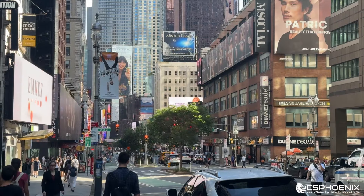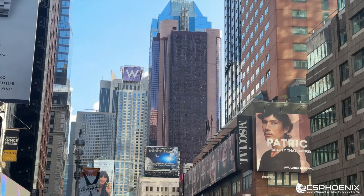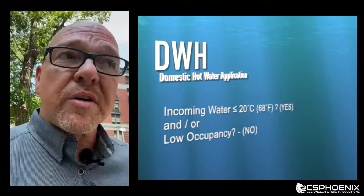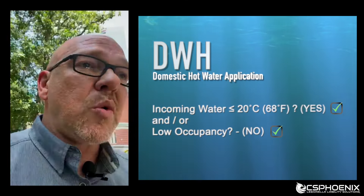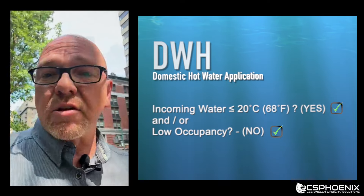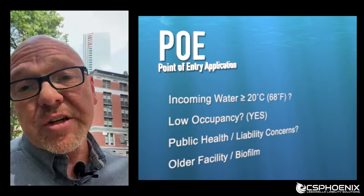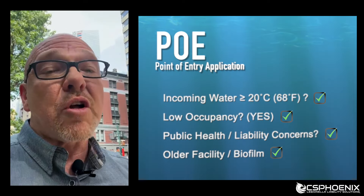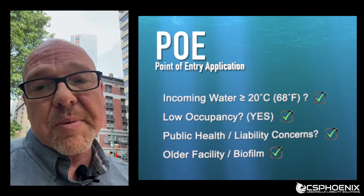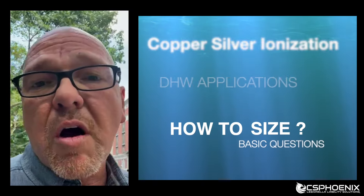This can be determined by the type of building. If it's fully occupied, you might just want to focus on the hot water side. If you are a facility with a low occupancy rate and there might be a lot of stagnation in the building, then you might want to focus on all of the water coming into the building. For now, let's focus on hot water.